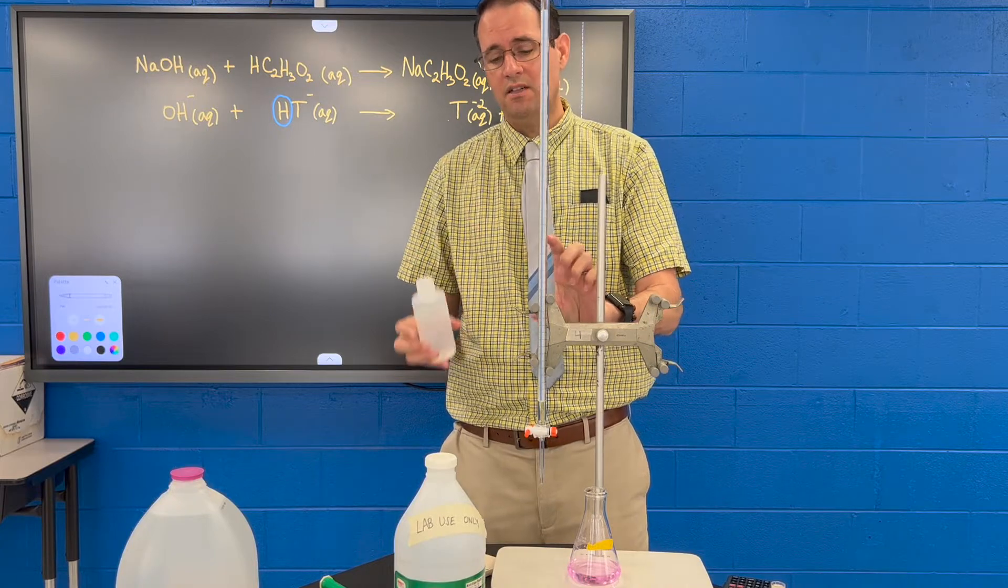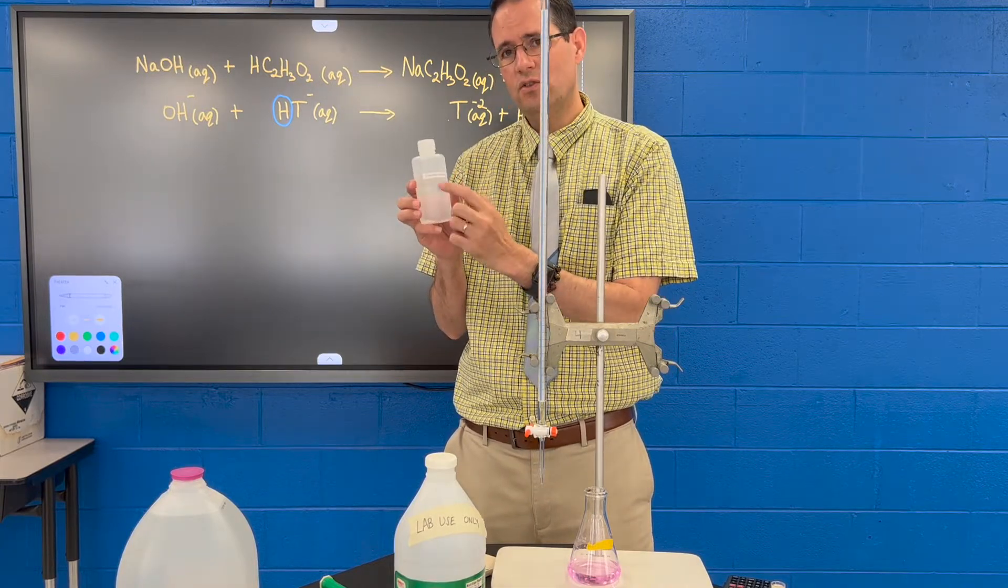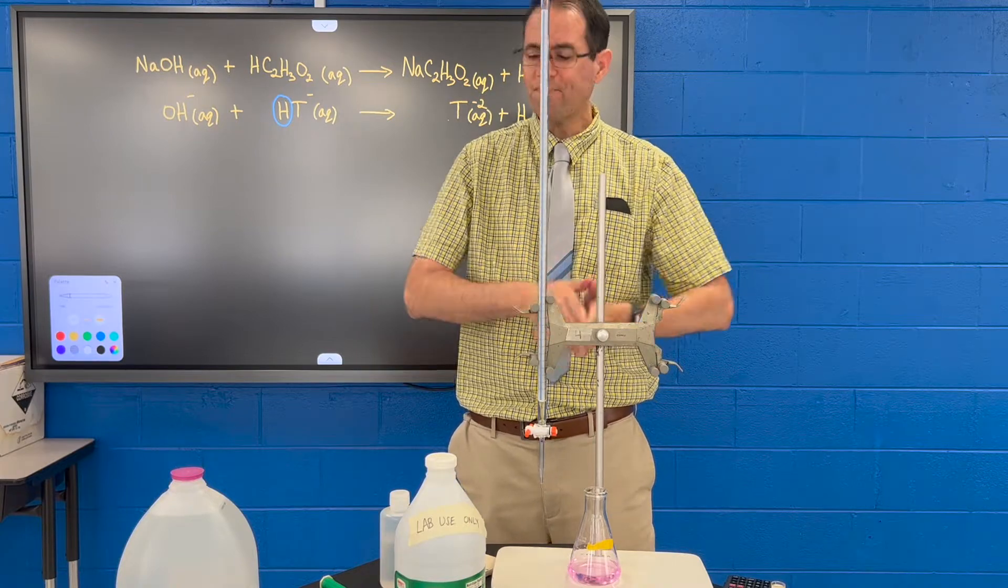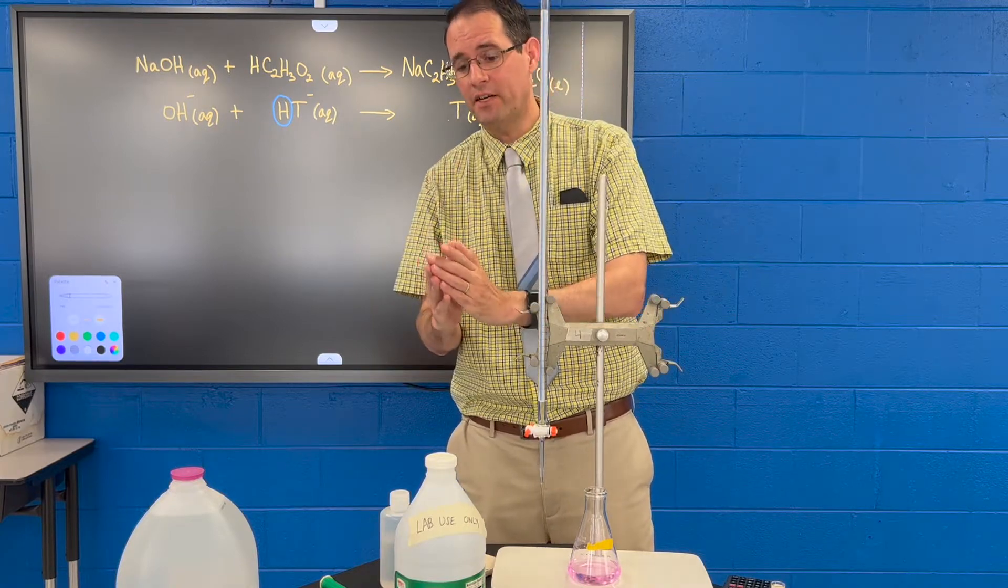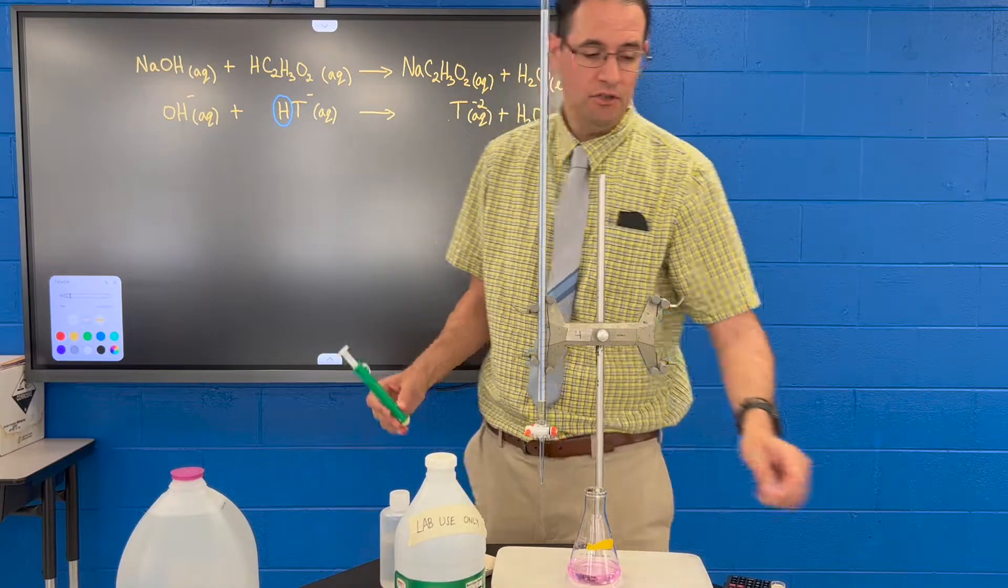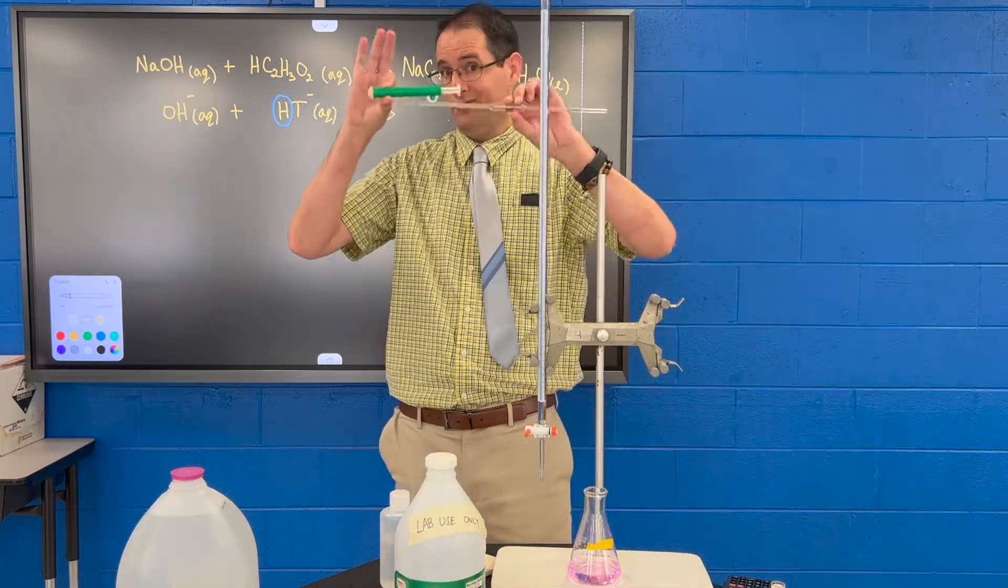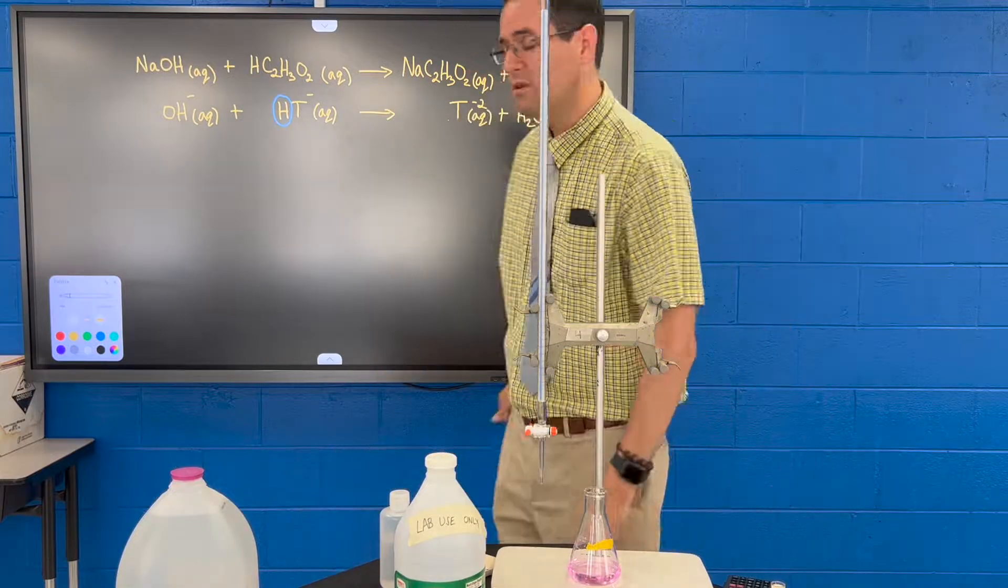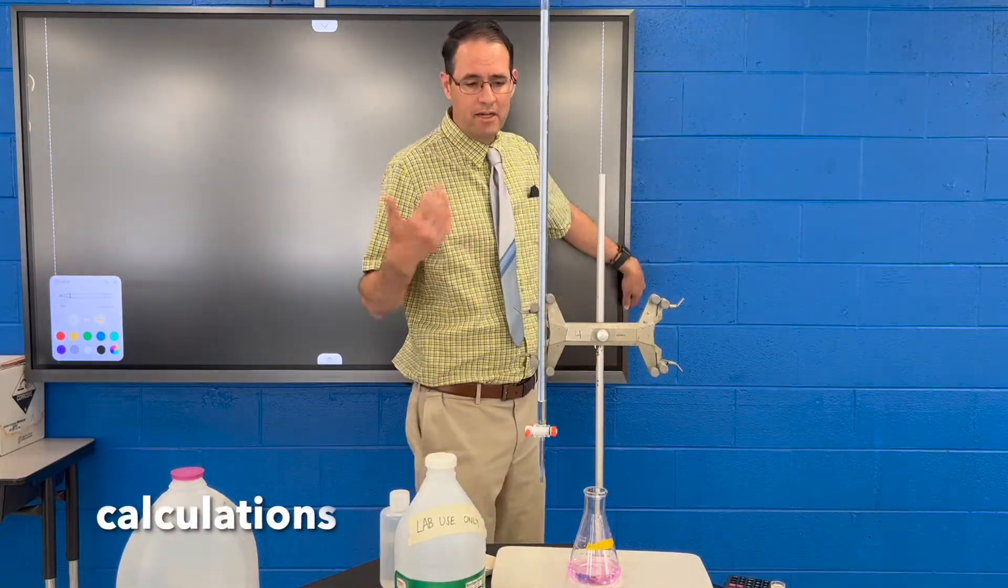So we start with the volume of sodium hydroxide and the molarity of sodium hydroxide and calculate the moles of sodium hydroxide. That's equal to the moles of vinegar, and then we divide by the volume that we measured for the vinegar to get the molarity of the vinegar. Let me show you that three-step process, and I'd like everybody to just show it as three separate steps.